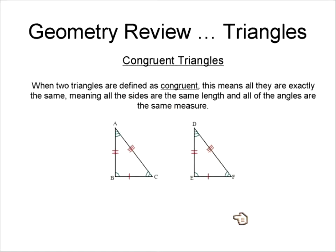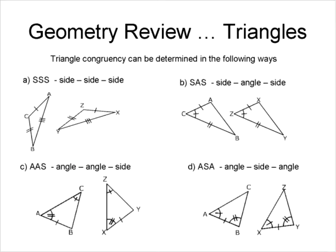The single tick marks indicate equal lengths, and the three tick marks match as well. So we know these two triangles are congruent. Now, we don't have to prove or show all the sides are equal to make the classification — we can look at just specific properties.